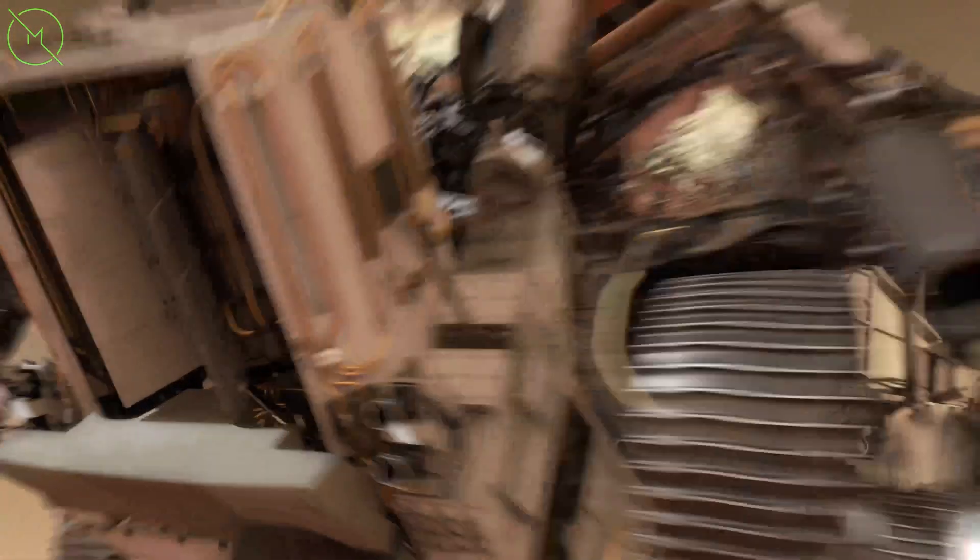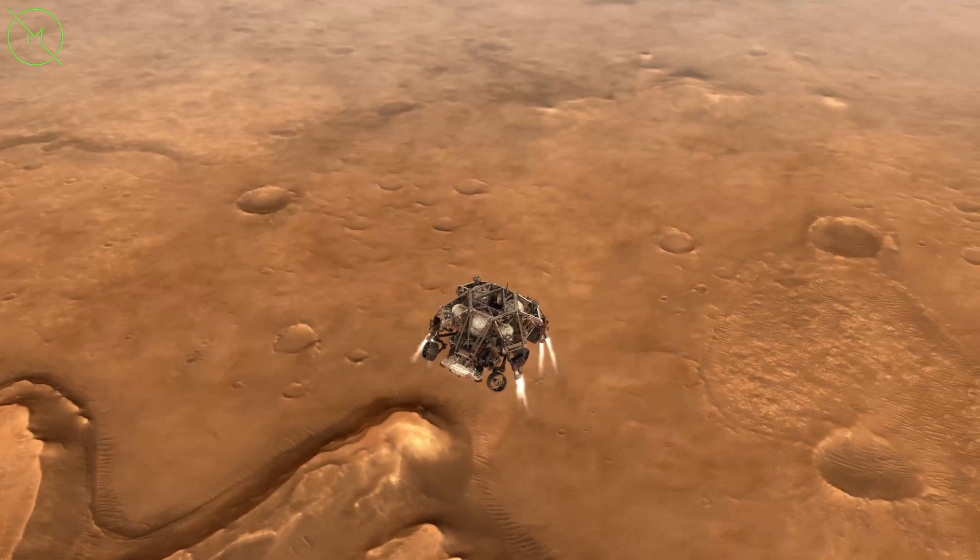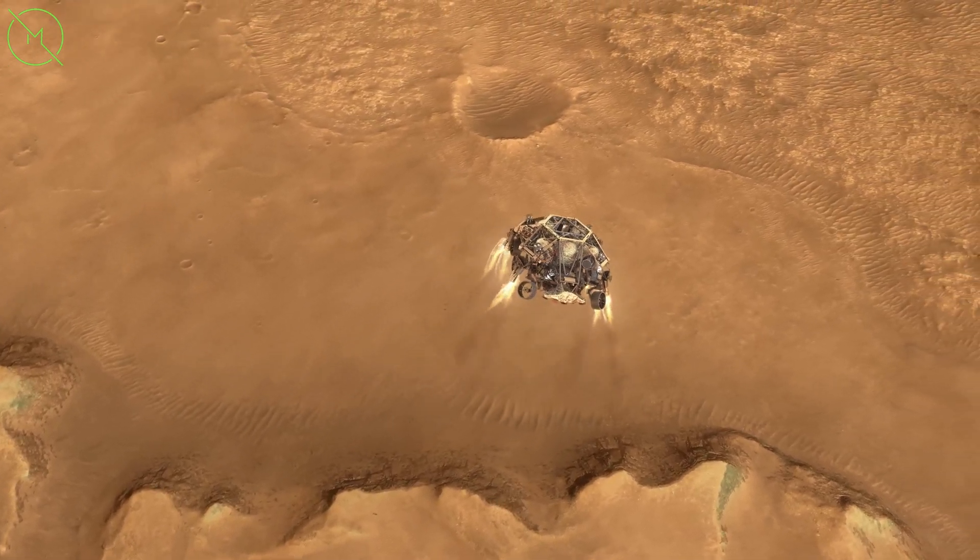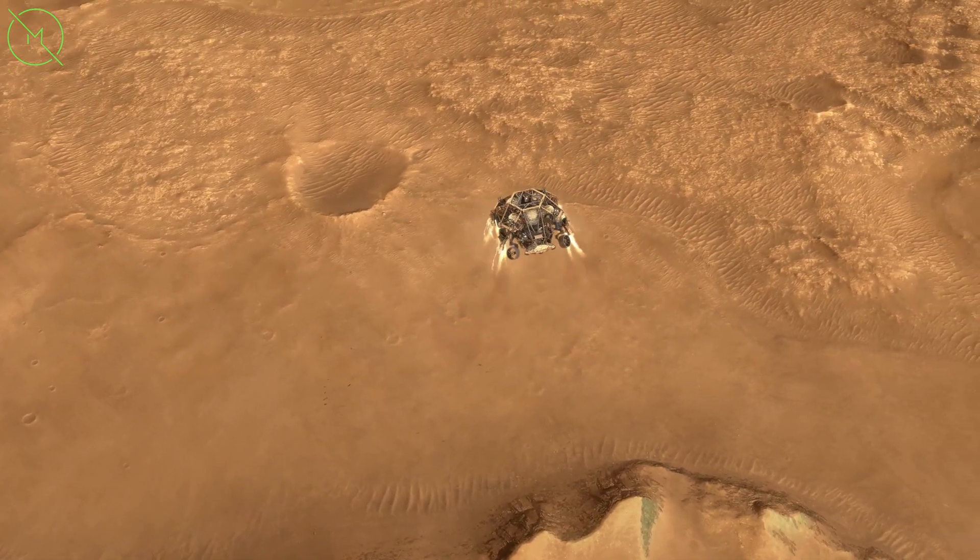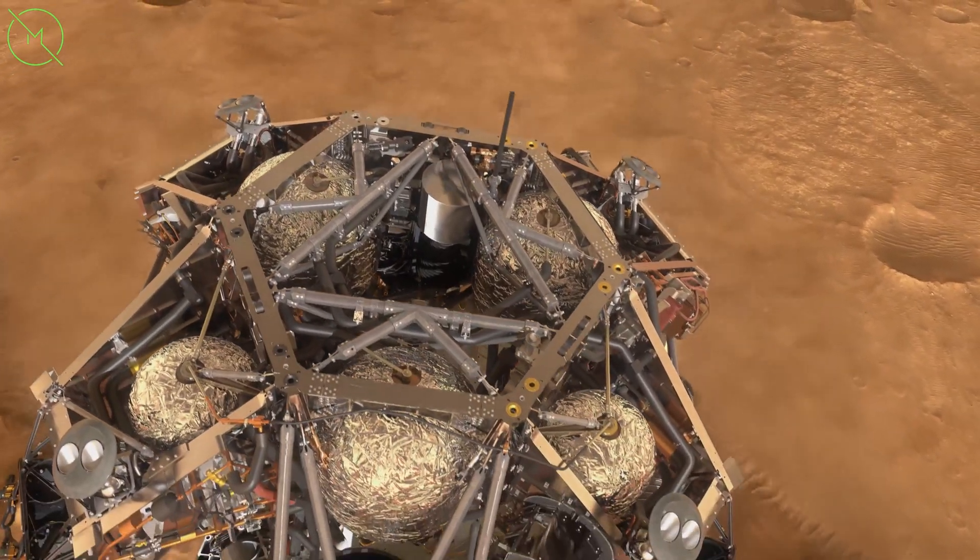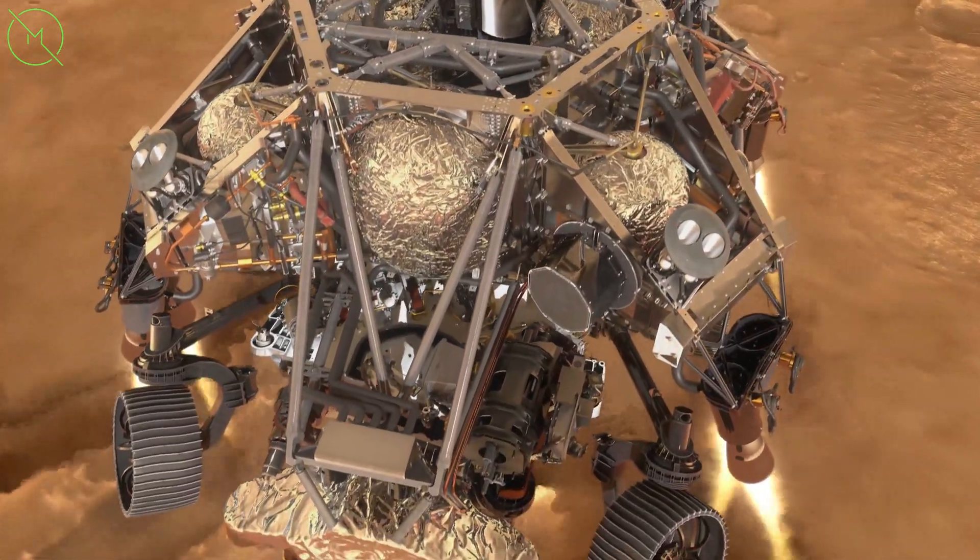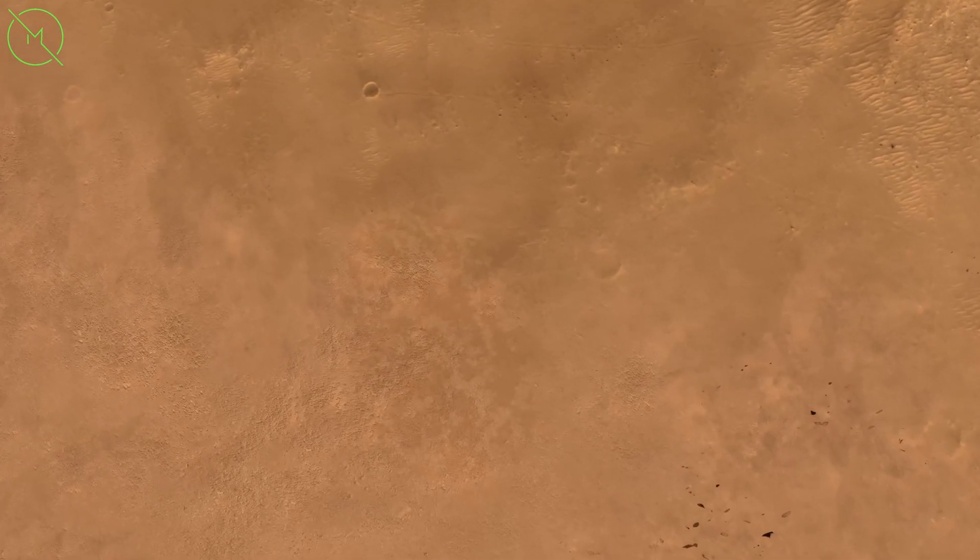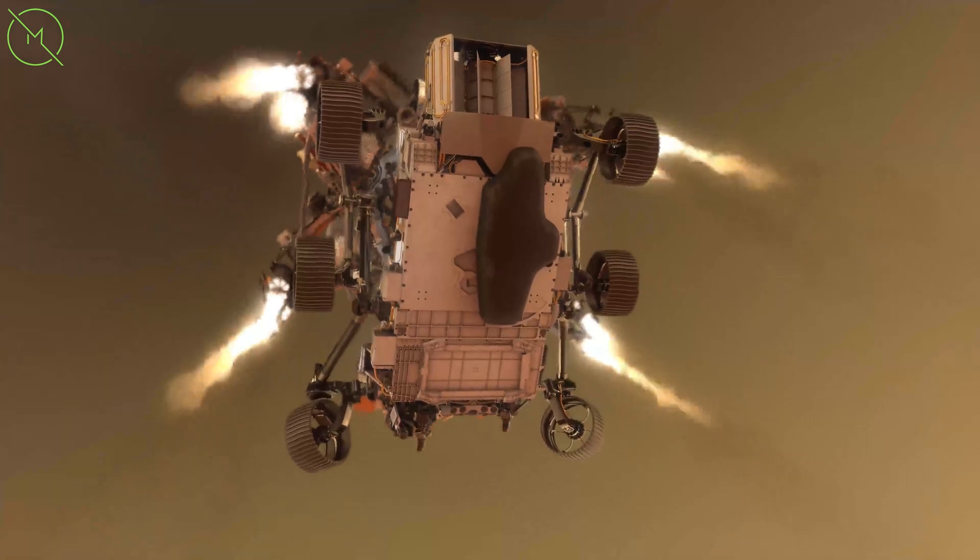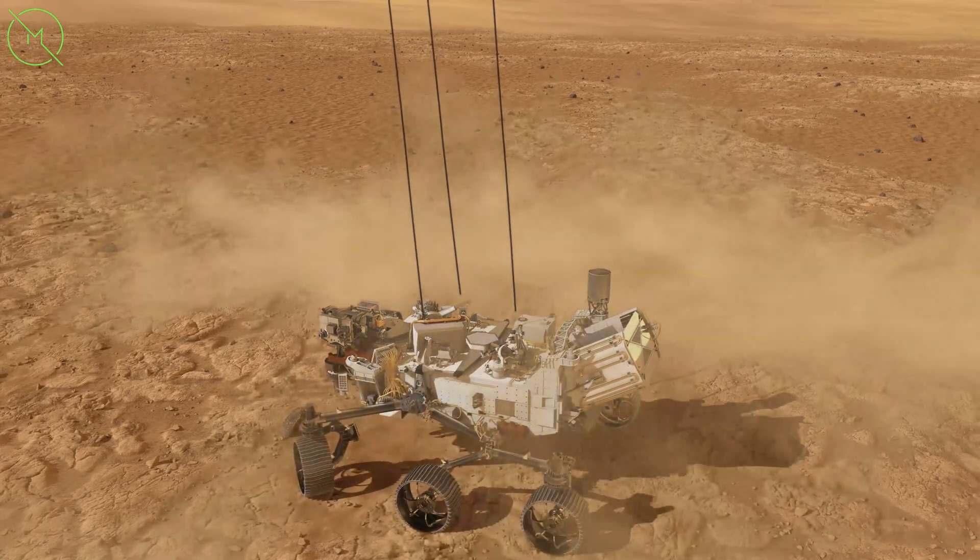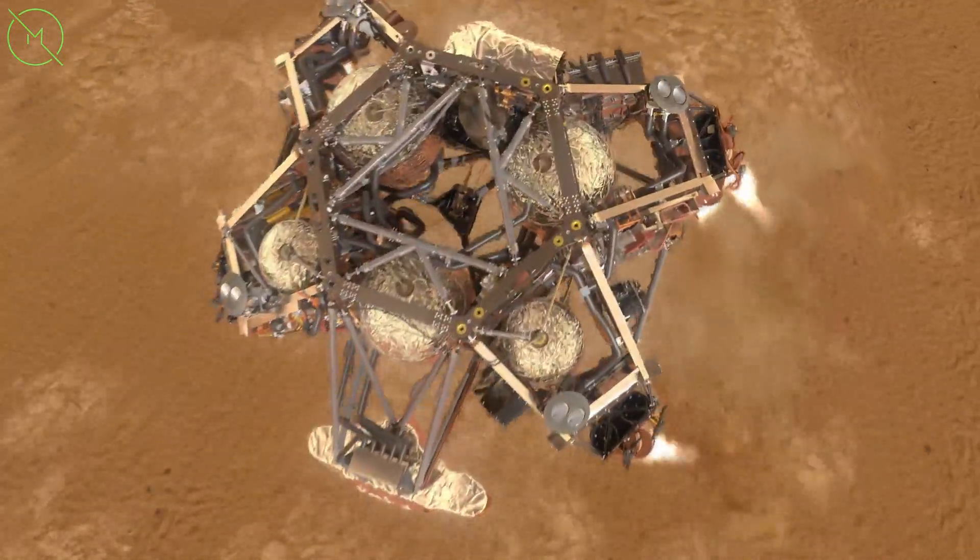Following that, you're going to drop the heat shield and then drop the rover and with powered descent navigate to where Jezero crater is. And then as you get closer to your intended target, the sky crane will lower the rover in place. And that's it. Once it's there, it does its business.